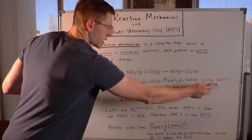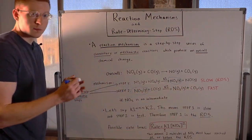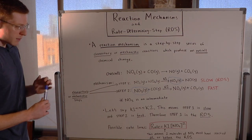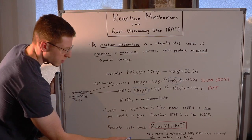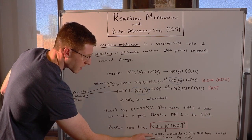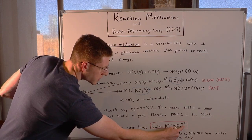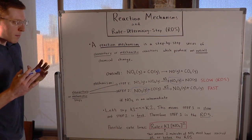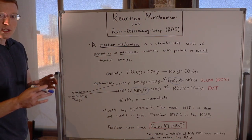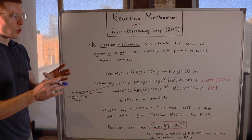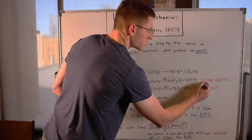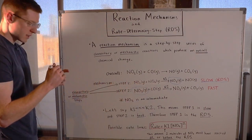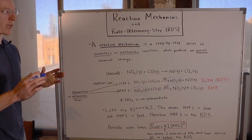Make sure you know how to read these rate laws. This means that two molecules — because of the square here — of NO₂ must have reacted either at or before the rate determining step. In this case, they reacted at the rate determining step.